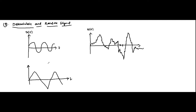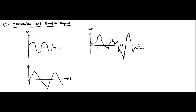So what is the basic difference between all these signals and this signal here? The basic difference is that all of these signals can be represented with the help of a mathematical equation, and their future behavior can be predicted from that. There is no uncertainty in the determination of the magnitude and phase of these signals.